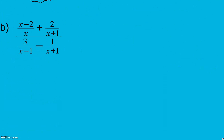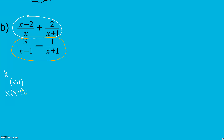For the last example, I'm going to simplify my numerator, then simplify my denominator, and then divide the two. In my numerator I need to get a common denominator — I have x and x plus 1 — so my common denominator is x times (x plus 1). In my first fraction I have the x but I don't have the (x plus 1), so I need to multiply by it. Whatever I do to the denominator I do to the top, and I put parentheses there because we're going to have to FOIL that numerator.